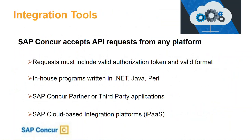We accept API requests from any platform. The requests must include a valid authorization token and be in a valid format — for example, a POST request must include all required fields, such as when adding a new user record. We accept requests from in-house programs in .NET, Java, or Perl, as well as SAP Concur partner applications and third-party companies that build integrations to Concur. Cloud-based integration platforms are also becoming more popular with clients. Any platform is accepted as long as it contains the correct authentication token and format.